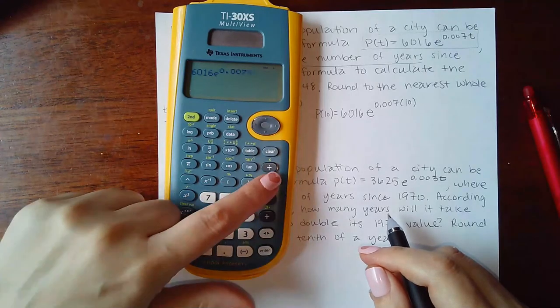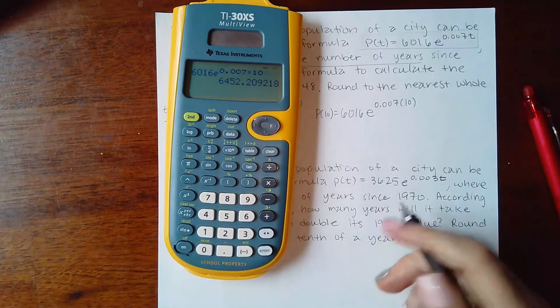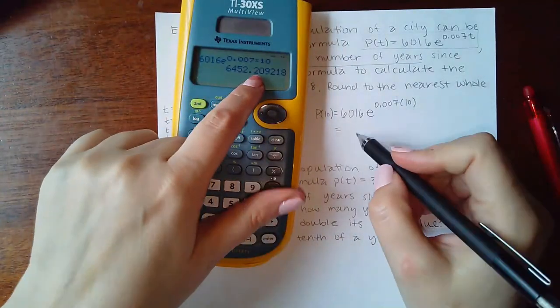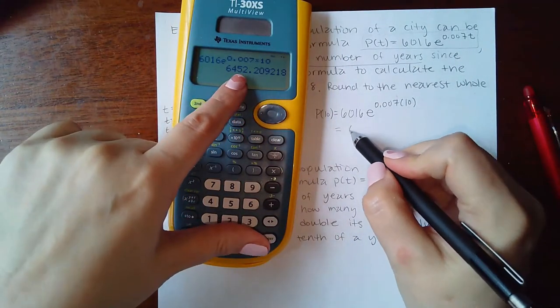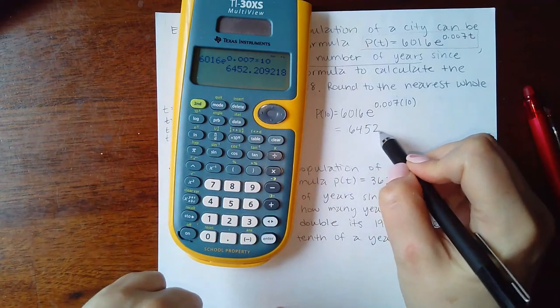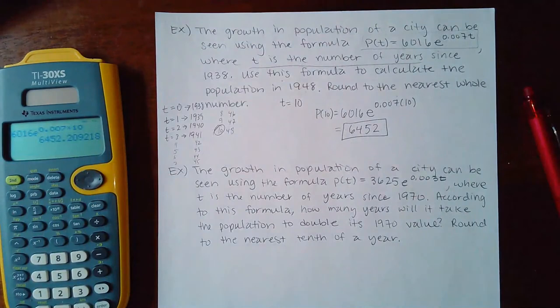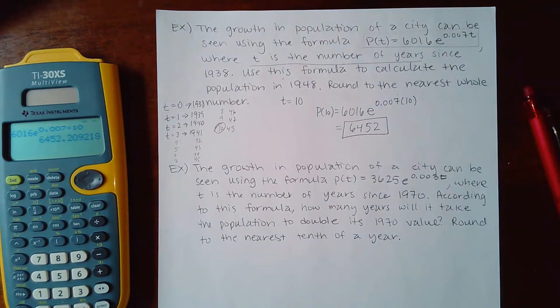And we get, it says round to the nearest whole number, so the 2 is going to not change this, so it's going to be 6452 and that will be the population in 10 years. So it's not growing too fast, in 10 years they only got about 436 people more, right?